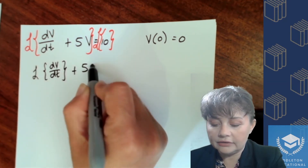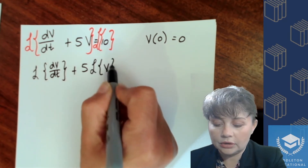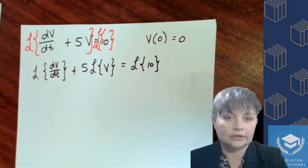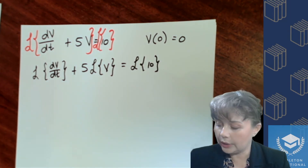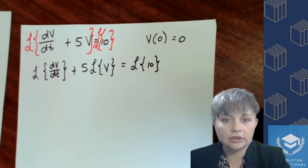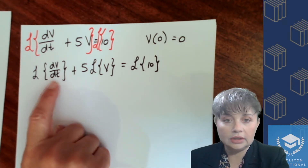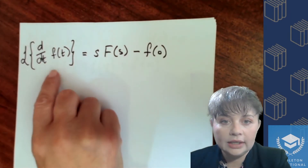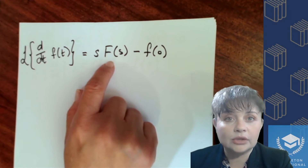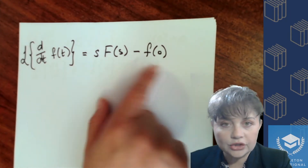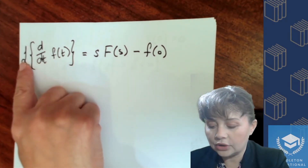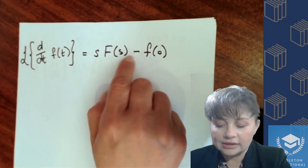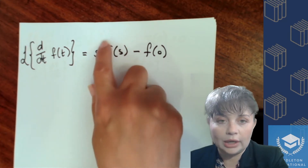...plus five times the Laplace transform of our dependent variable, equals the Laplace transform of a constant. If we go to our formula, the transform of the first derivative looks like this. In terms of notation, if you look at this equation you've got the Laplace transform of the first derivative of f of t, which gives s·F(s).